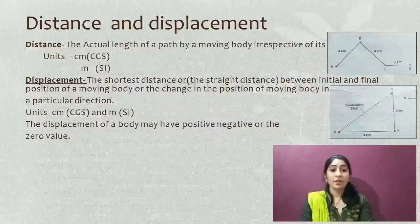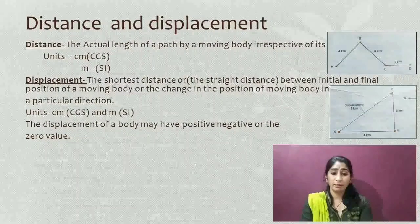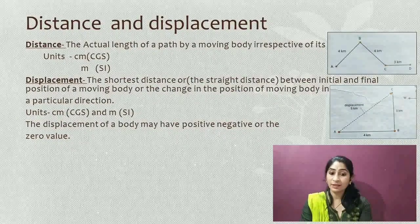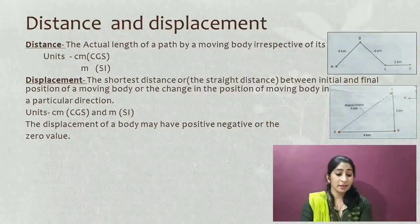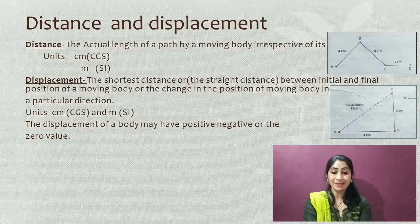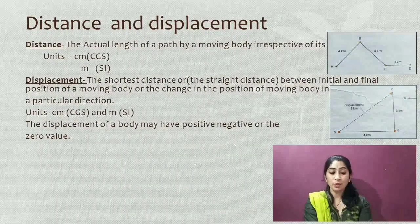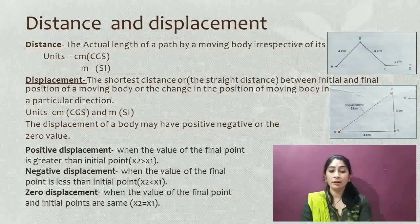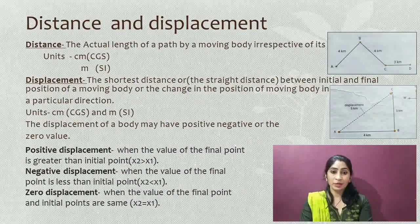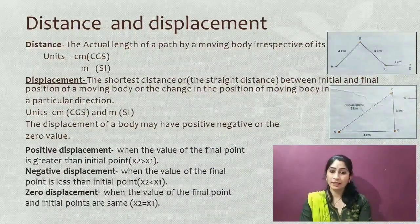Displacement is the shortest or straight distance between the initial and final point of a moving body, or the change in position of a moving body in a particular direction. Since direction is mentioned, displacement is a vector quantity. As seen in the diagram, displacement is the straight distance from point A to C, while distance is A to B plus B to C. The units of displacement are the same as distance — centimeter in CGS and meter in SI.